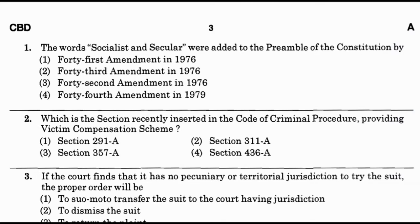We will solve 25 questions in each video. Question number 1: The words 'socialist' and 'secular' were added to the Preamble of the Constitution by — option 1: 41st amendment 1976, option 2: 43rd amendment 1976, option 3: 42nd amendment 1976, option 4: 44th amendment 1979. The answer is option 3 — 42nd amendment in 1976.